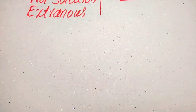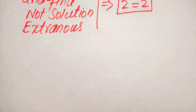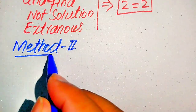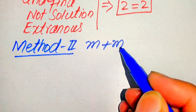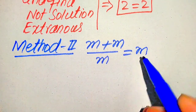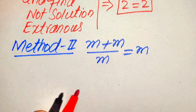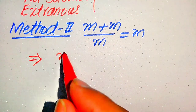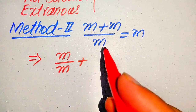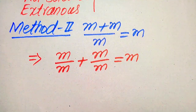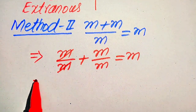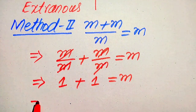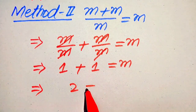Now we solve this problem using the second method. We again copy down the given equation: m plus m divided by m equals m. In the second method, we break the fraction, writing it as m divided by m plus m divided by m equals m. Clearly, m cancels with m giving 1, and the second m cancels with m giving 1, so we get 1 plus 1 equals m, which gives us 2 equals m.